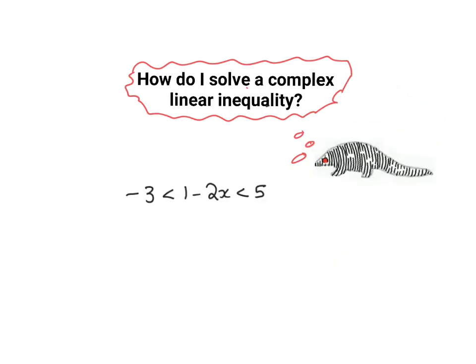Now the final part of this lesson is how do you solve a complex linear inequality? That means more than one of them. So there's one linear inequality and here's another one. So actually we have three parts here: the minus 3, the middle part and the 5. So whatever you want to do to solve this inequality, you will do it on three different places. So I want to solve x. So that's my instruction, solve x.